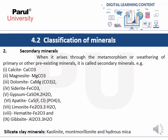Secondary minerals: when a mineral arises through the metamorphism or weathering of primary or other pre-existing minerals, it is called a secondary mineral. Examples are calcite, magnesite, dolomite, siderite, gypsum, apatite, limonite, hematite, gibbsite. It is also a silicate mineral group including kaolinite, montmorillonite, and hydrous mica — all are silicate clay minerals.